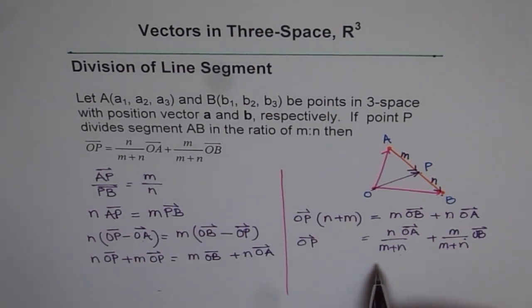So that is how we can prove that OP is equal to N over M plus N times OA plus M over M plus N times OB. This is a formula which finds huge application in such examples wherever we are dealing with division of line segments.